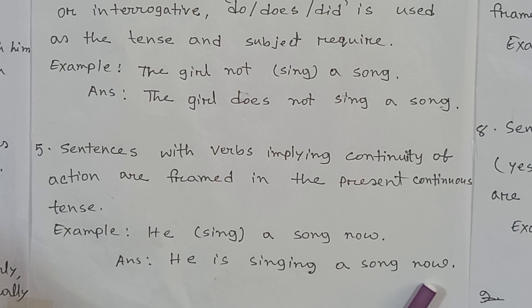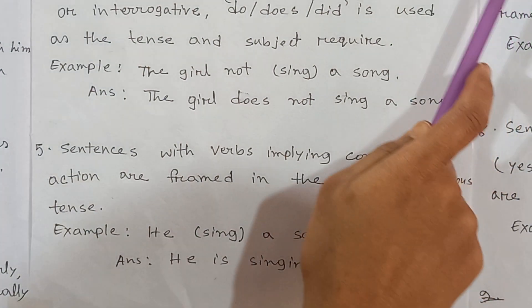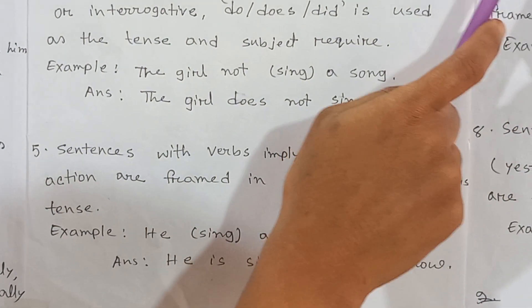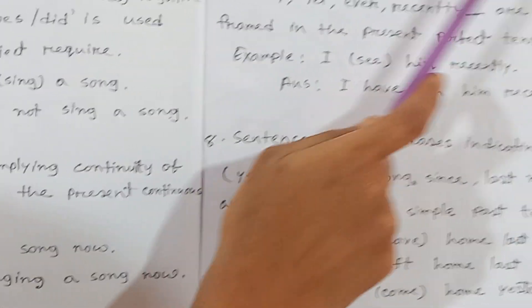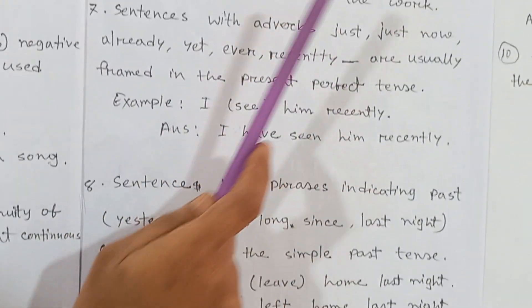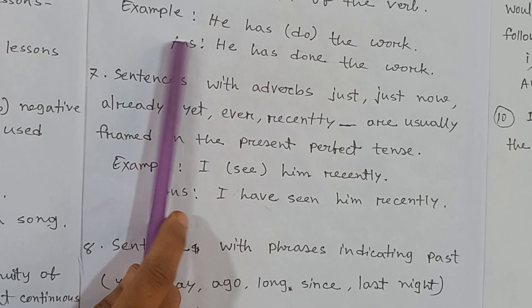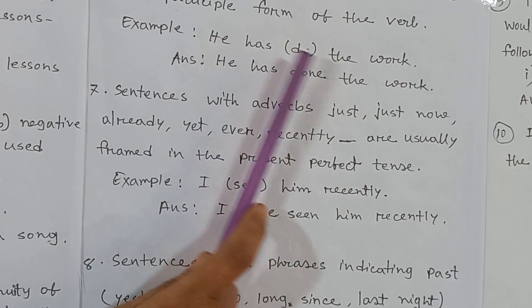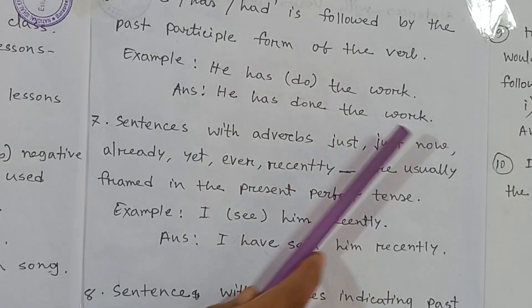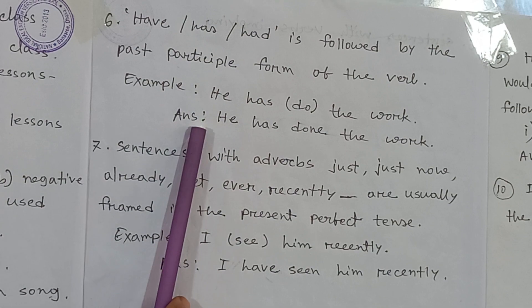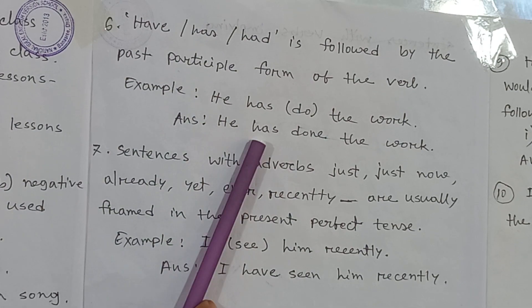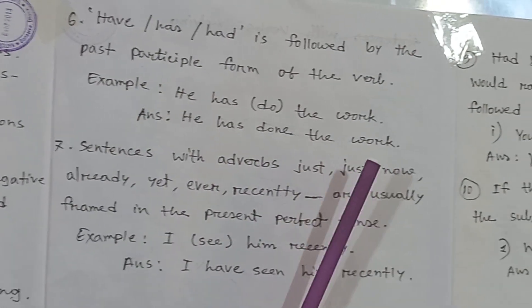Sentences with verbs implying continuity of action are framed in the present continuous tense. Then look: have, has, or had is followed by the past participle form of the verb. For example, 'He has (do) the work' — you write 'He has done the work.'